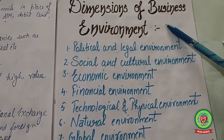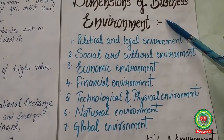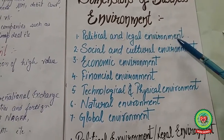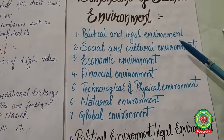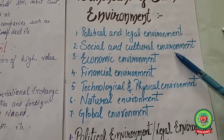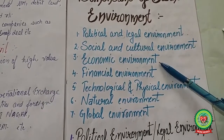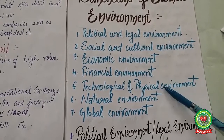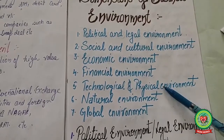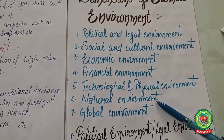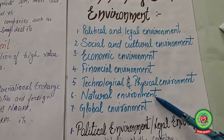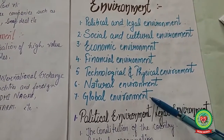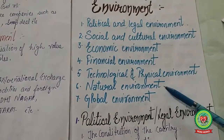The dimensions of business environment are seven: political and legal environment, social and cultural environment, economic environment, technological and physical environment, natural environment, and global environment. These are the environments that affect the working of a business enterprise.